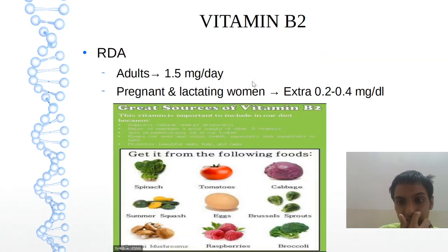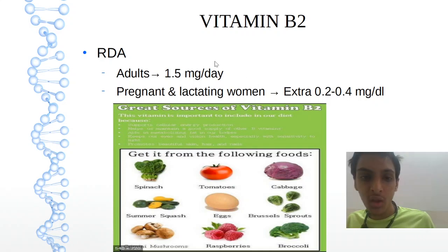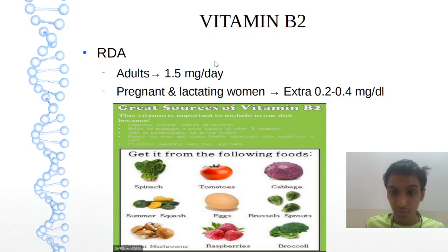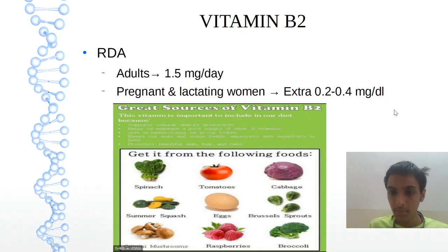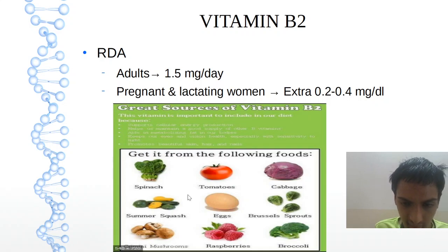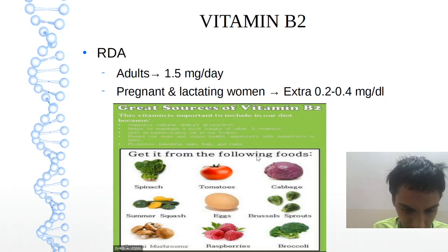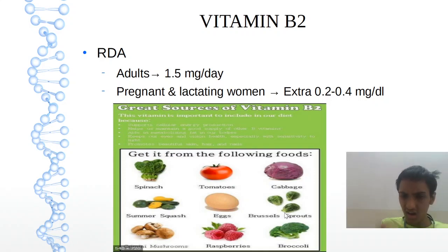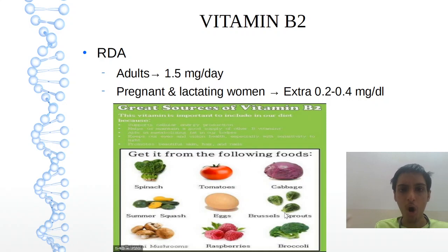The RDA for vitamin B2 is 1 to 1.5 milligrams per day. For pregnant and lactating women, an additional 0.2 to 0.4 milligrams per day is needed. Sources include spinach, tomatoes, cabbage, eggs, mushrooms, vegetables, fruits, milk and milk products, fish, and oils. These sources are common across all B-complex vitamins.